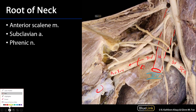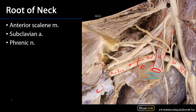We can also see, upon the anterior scalene muscle, a very important nerve. It arises from the ventral primary rami of cervical nerves 3, 4, and 5, and it is found riding down that anterior surface of the anterior scalene before it dives down deep through the superior thoracic inlet. That's the phrenic nerve, heading down to innervate the hemidiaphragm.